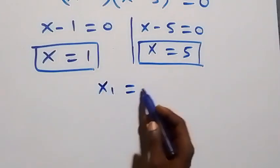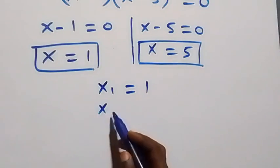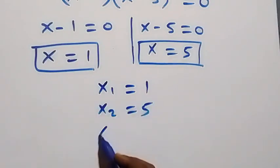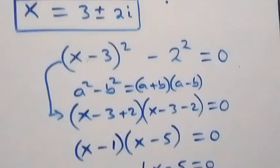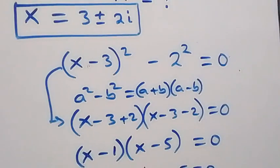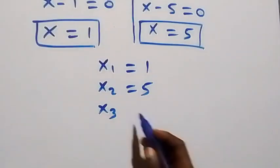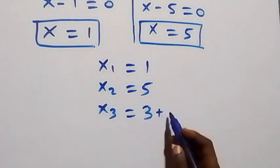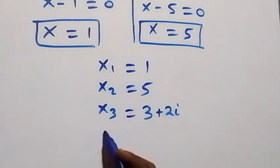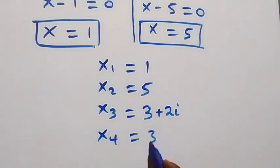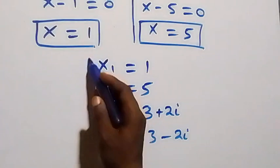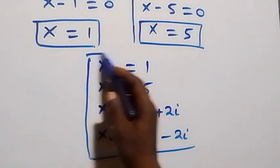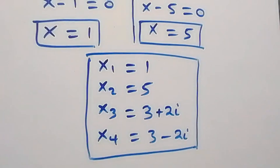We now have four solutions in total. The first: x1 equals 1. The second: x2 equals 5. The third: x3 equals 3 plus 2i. The fourth: x4 equals 3 minus 2i. That gives us two real solutions and two complex solutions.